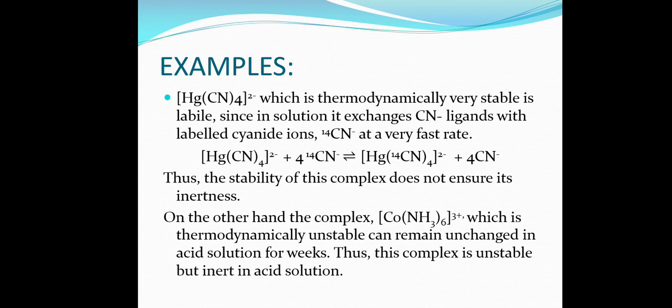This is demonstrated by exchanging the CN⁻ ligand with a labeled carbon-14 cyanide. Carbon-14 is a radioactive isotope used as a tracer to determine whether substitution has taken place. The reaction shows substitution does occur, and we can confirm the complex contains the C-14 isotope. Thus, the stability of a complex does not ensure its inertness — it may be labile.